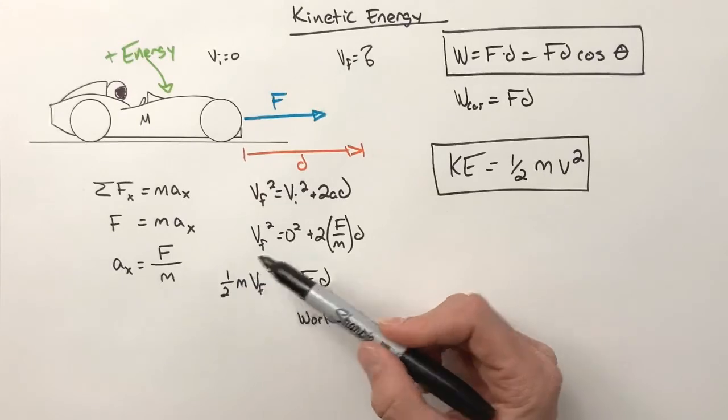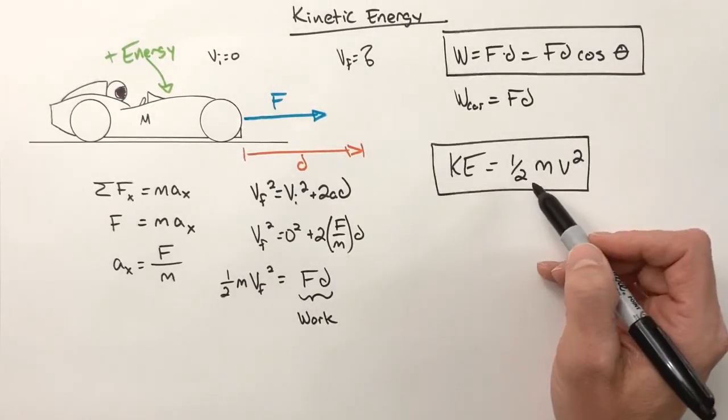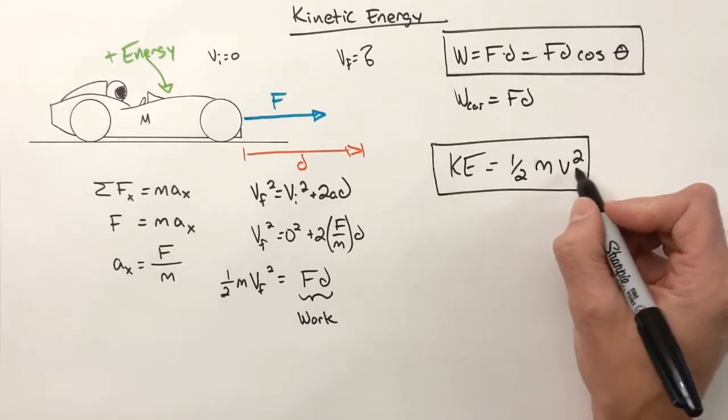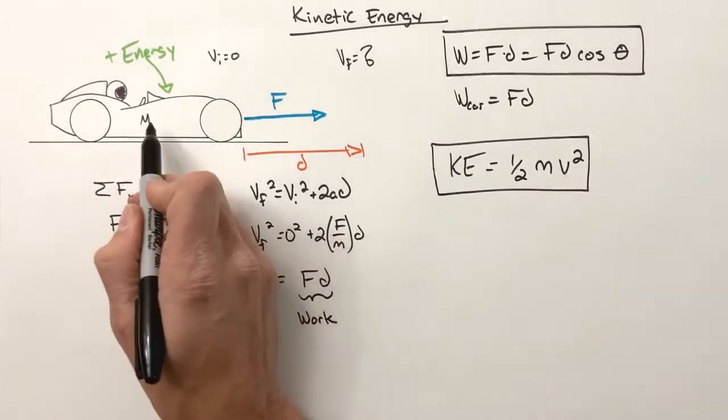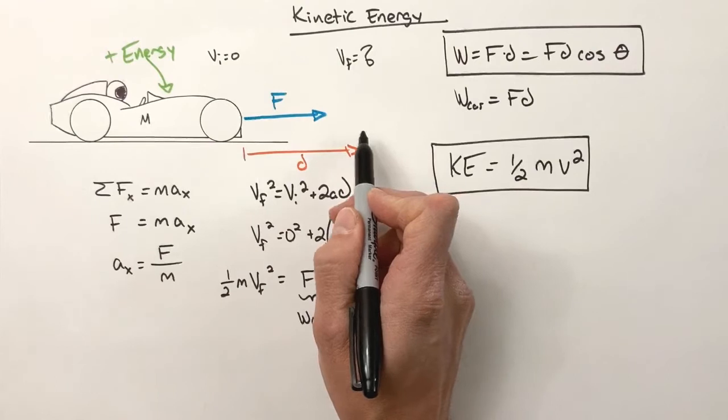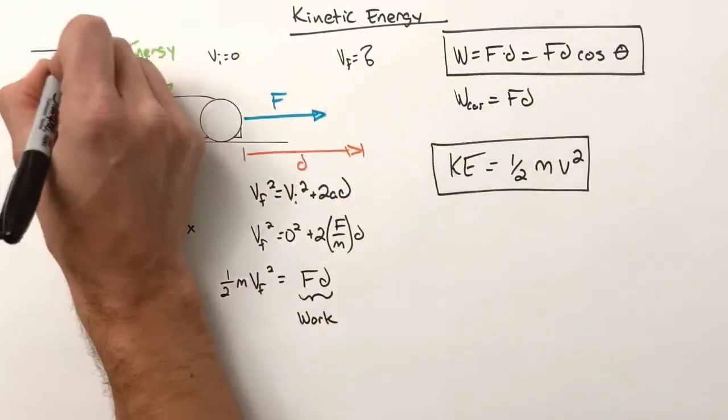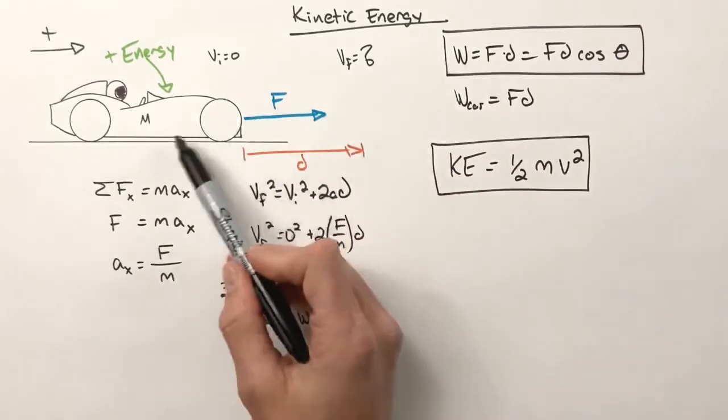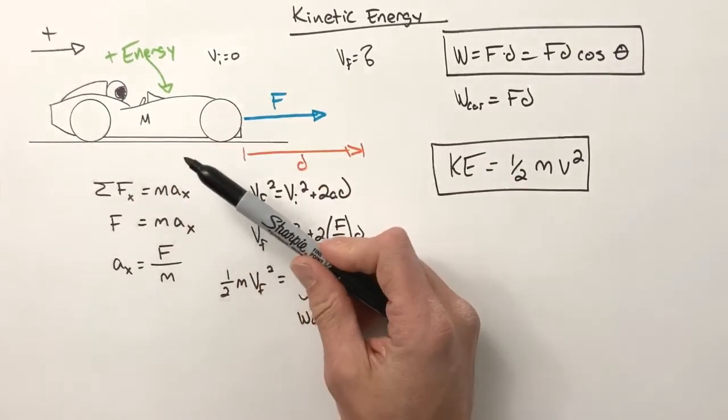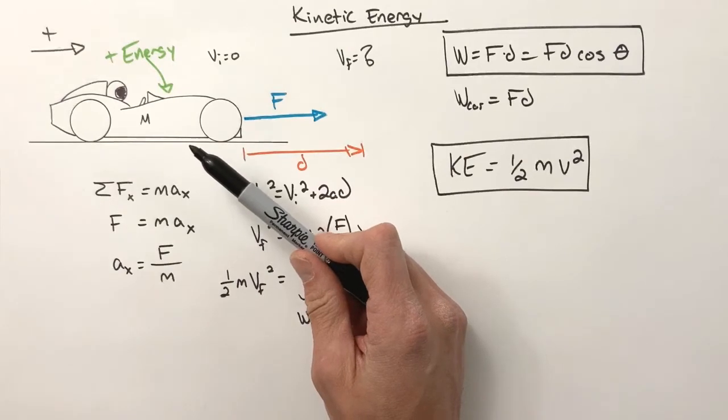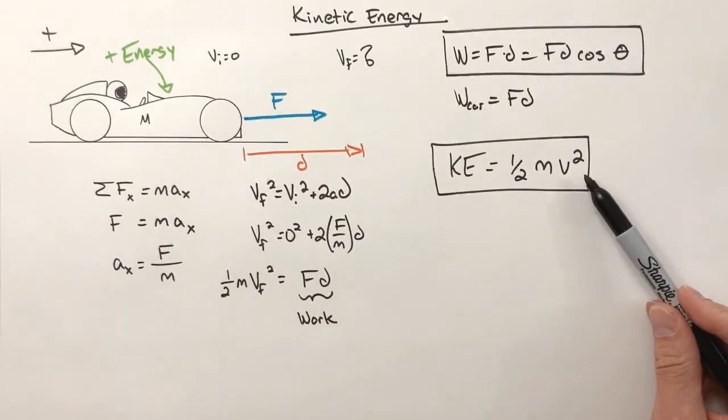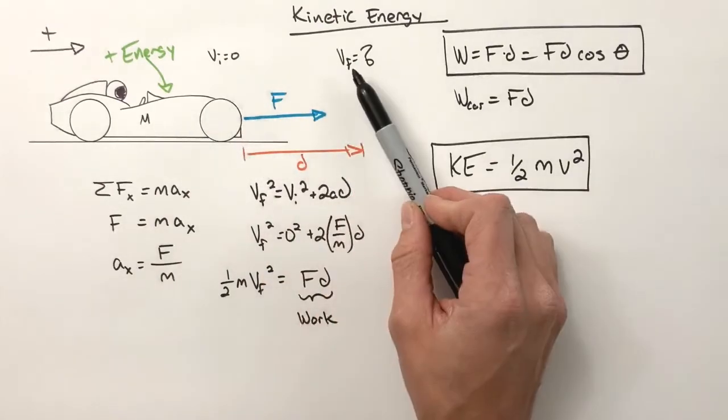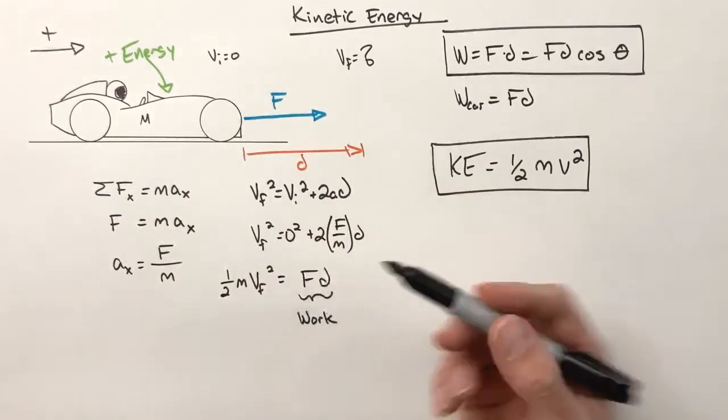There's a couple things to be pointed out here about kinetic energy, and the first one we can see is this little squared right here. If I was to push this car to the right, we know it would be speeding up. We've gotten used to the convention that right is to the positive, it would have a positive final velocity. But if I were to do the same thing pushing the car to the left, well, the squared right here basically means we don't care whether our final velocity is positive or negative.